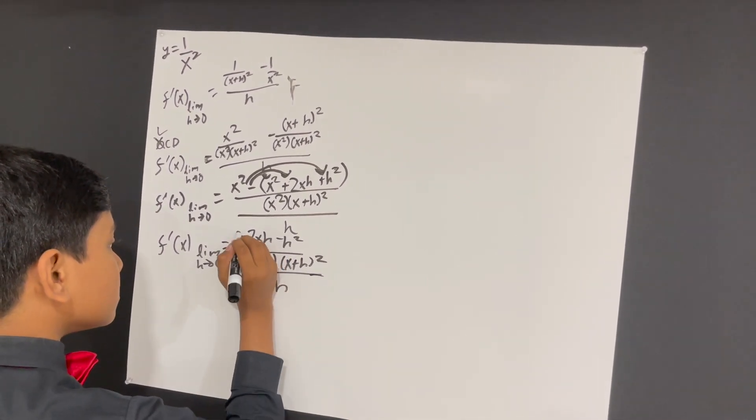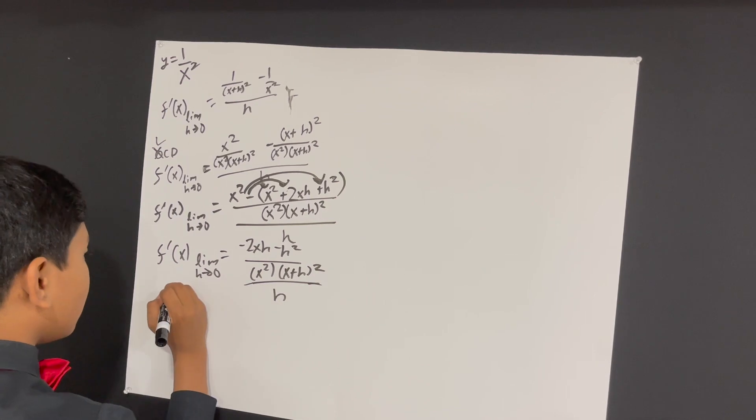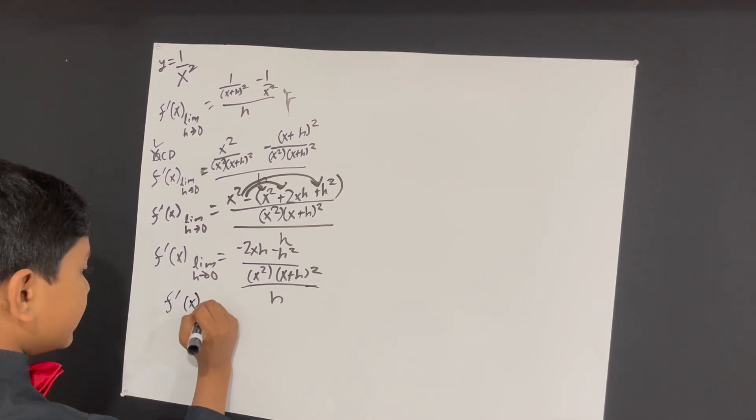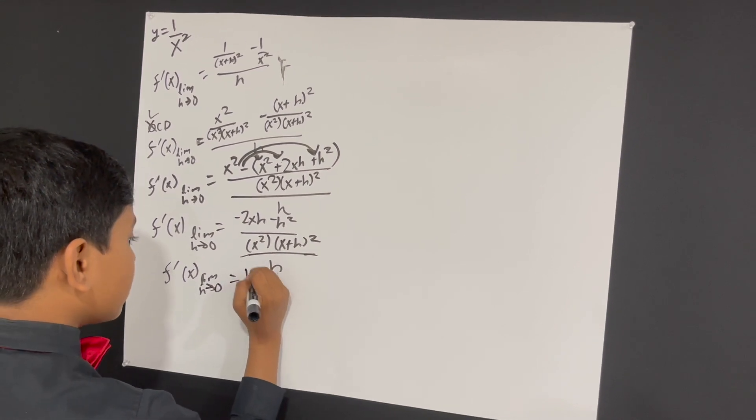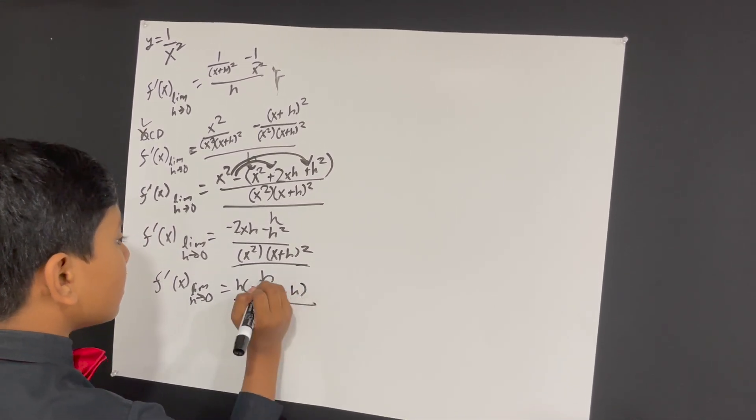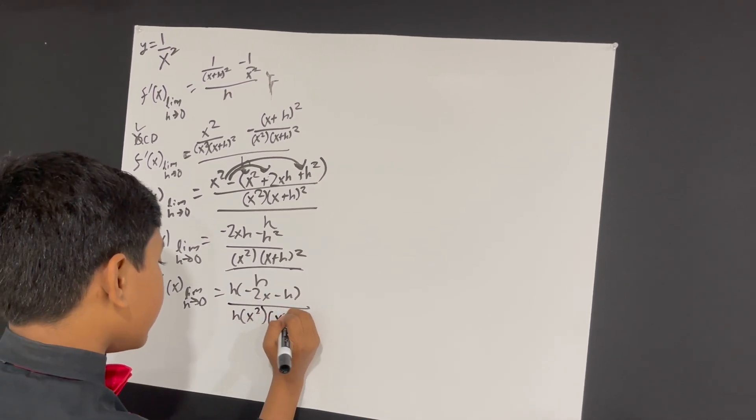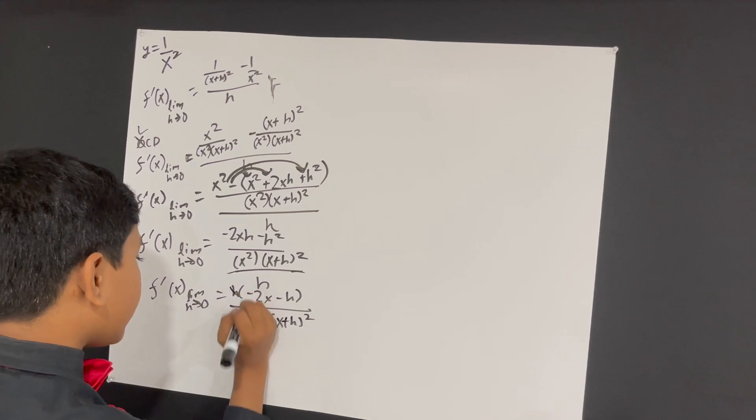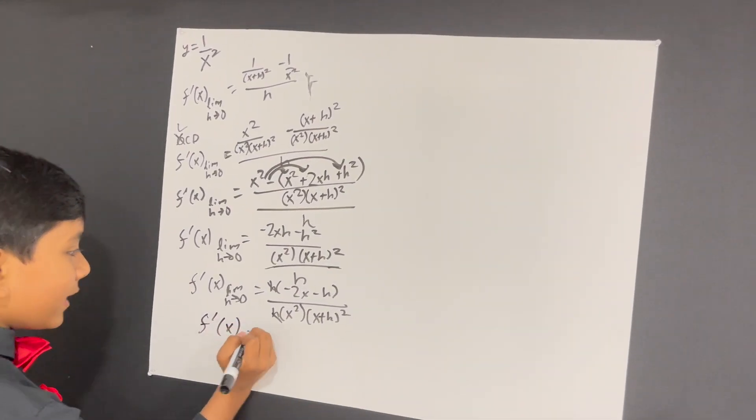Now, the thing is, we can factor out h from here, which makes things relatively easy. So, if we factor out h from here, we get this, and we can combine these two denominators, and now, cancel, cancel. Now, we're left with something very simple.